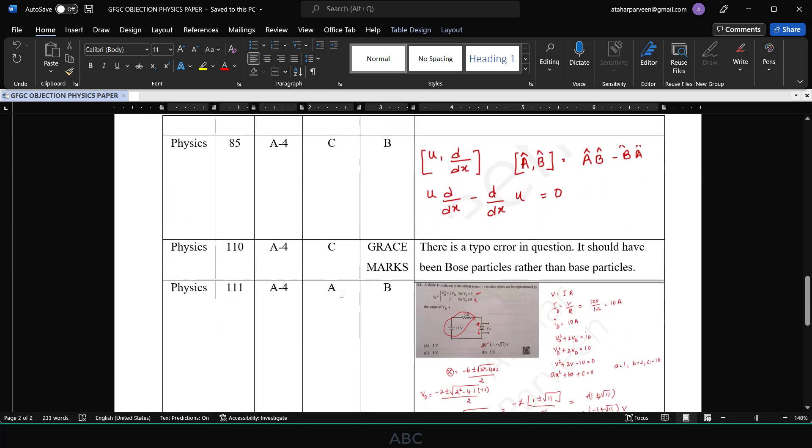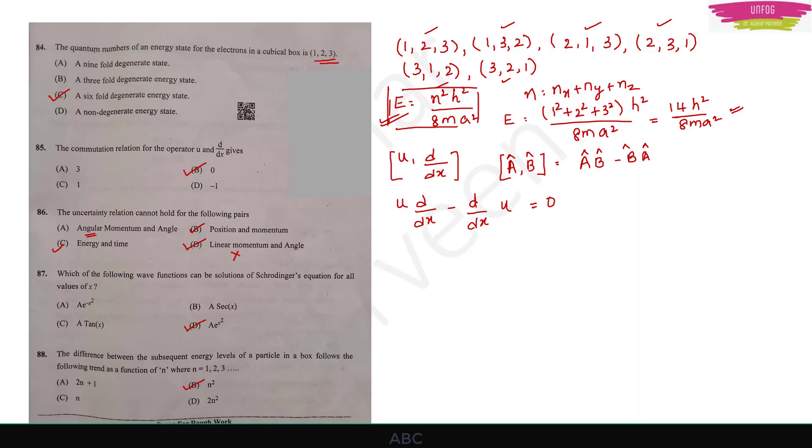Next question is 85. This I am really doubtful, I don't know, maybe I am right or there are chances that I am wrong, but still I have included this in the objection list. Question number 85 in part 2, you can see d by dx of a operator, I thought it should be 0 but they have given option C which is 1. Maybe I am wrong, I don't know, but I didn't want to take a chance so I included this in the objection list.